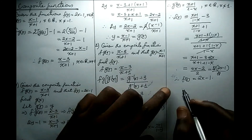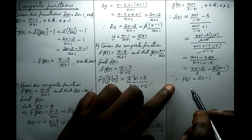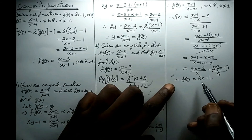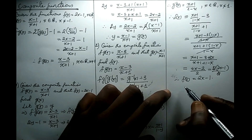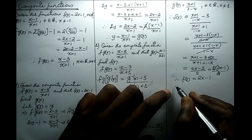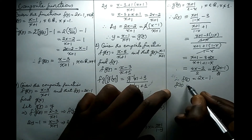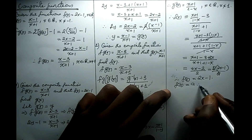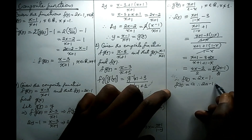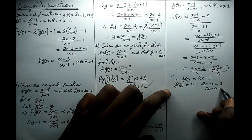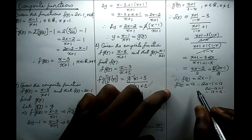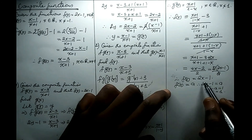In other questions under functions, you might be asked to find the element that maps onto itself under the function f. If an element maps onto itself, it means the element and its image are the same. If that element is a, then f of a equals a. So 2a minus 1 equals a, giving 2a minus a equals 1, meaning a equals 1. The element that maps onto itself under f is 1.